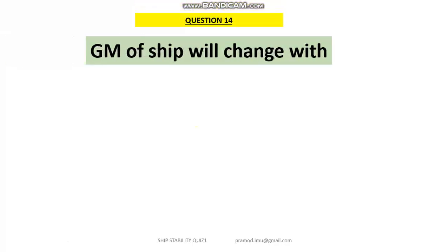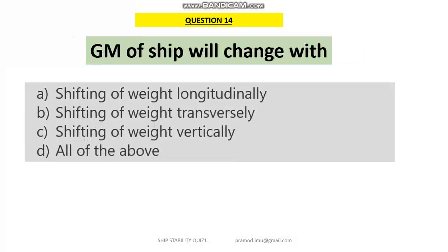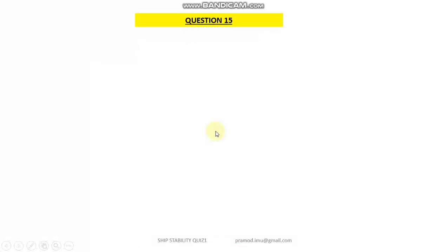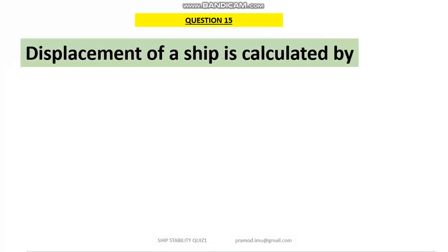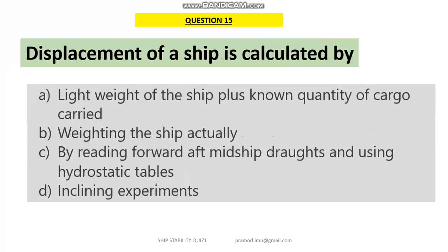Question number 14: the GM of a ship will change — the answer is C. We know that any shifting of mass in the vertical plane will increase or decrease the value of GM of a ship. Quiz number 15: the displacement of a ship is calculated as option A — lightweight plus deadweight. That will be the answer for this question.